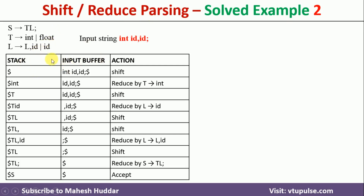We have three things: one is called the stack, another one is called the input buffer, and the third one is the action. Initially, the content of the stack is null, so that is represented with $. The input buffer is 'int id comma id semicolon', followed by $ which indicates the end of input.